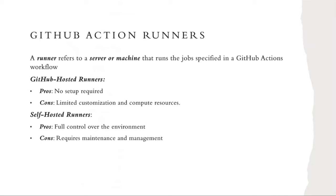GitHub Actions also uses something called Runners — a machine or server. GitHub has two types. A GitHub-hosted runner requires no setup as it's already integrated within GitHub; you just use it. However, it comes with limited customizations, limited resources, and you need to pay. There's also a self-hosted runner, which allows you to take full control of the environment, but the drawback is that it requires regular maintenance and management.